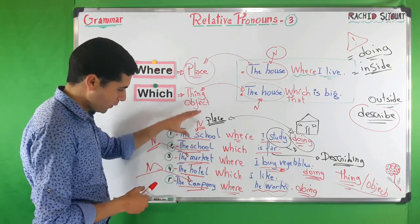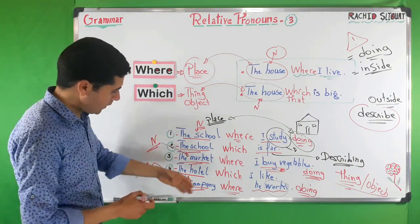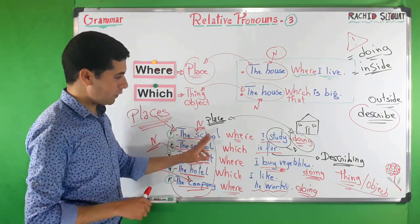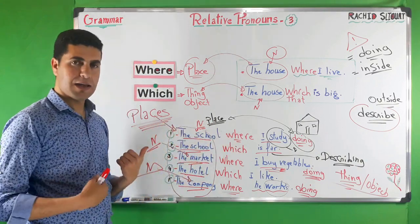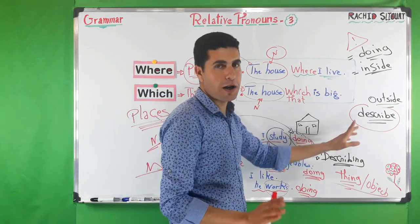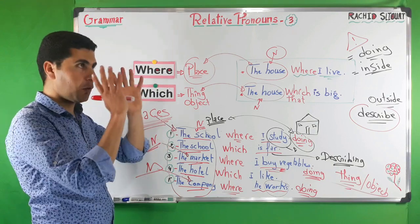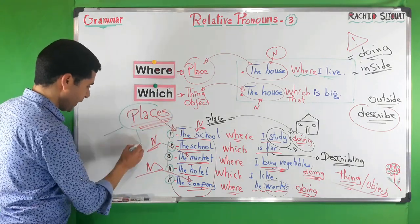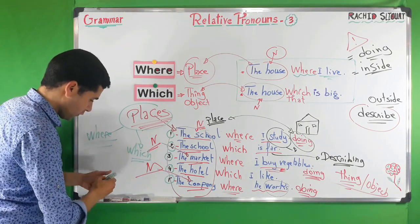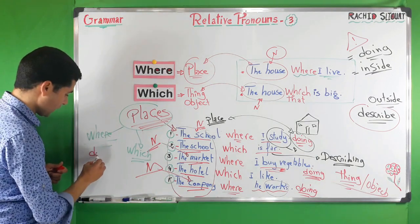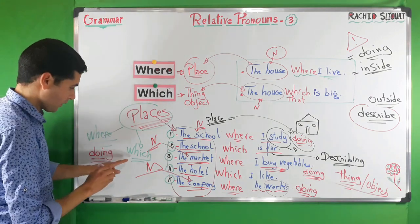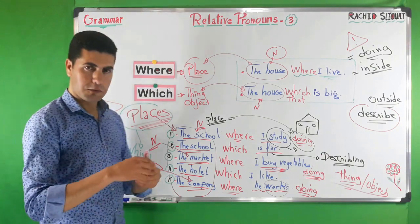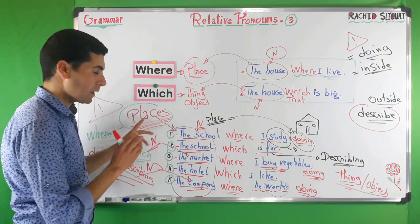All these nouns are places, but we can use either where or which depending on the context. Use where when talking about something we do in the place — doing, inside. Use which when we describe the place — talking about it from outside. This is the key distinction to remember when it comes to places.